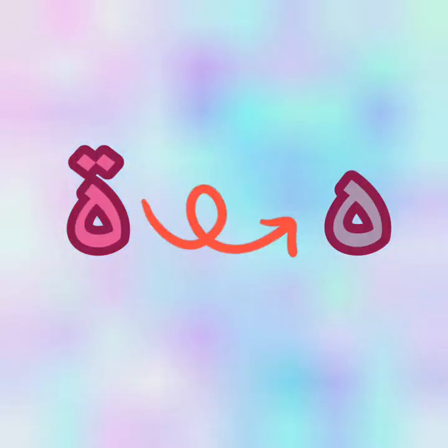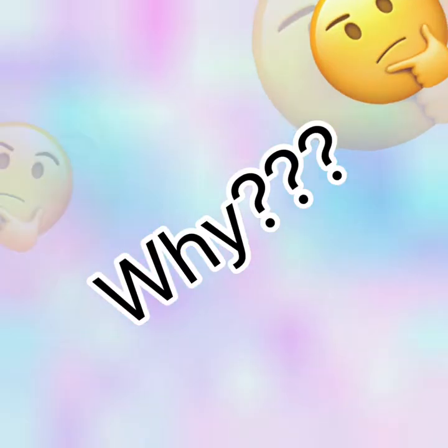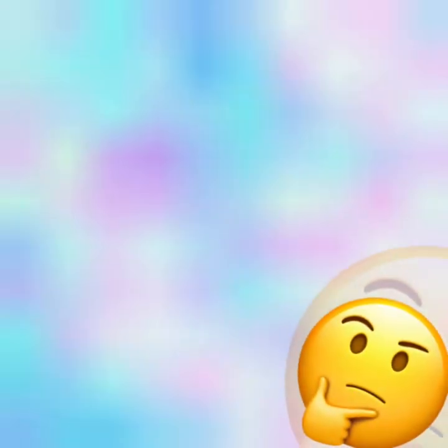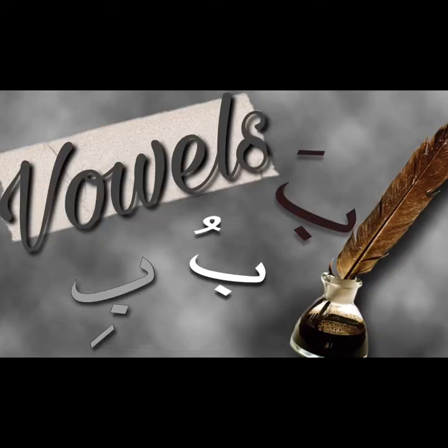Whenever you see a ta marboota, don't even think about it — this is a feminine word. Now, sometimes the ta marboota is written like a ha, looking like a ta except there are no dots on top. The reason is that the ta marboota at the end of a word sounds like a ha. You only pronounce it as a ta if there is a vowel before the ta marboota. I've already taught you about vowels in my previous video — link in the description.